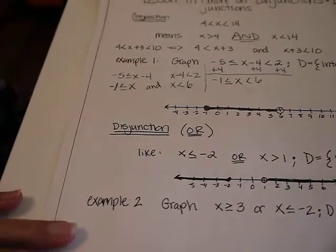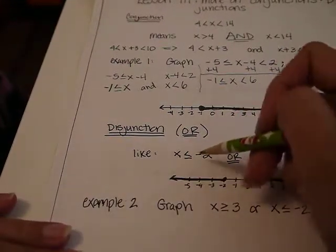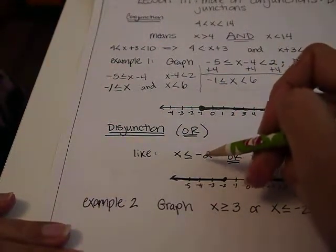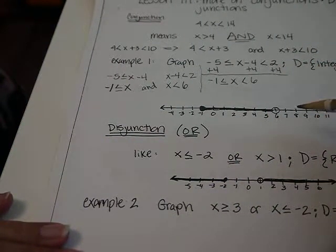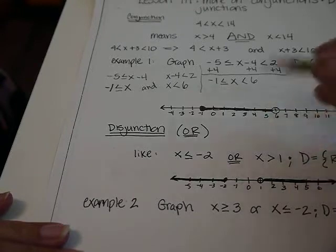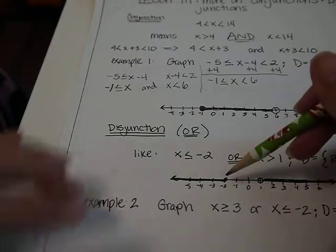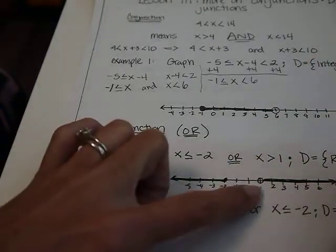or means either one. So a disjunction, you might read something like x is less than or equal to negative 2, or x is greater than 1. Either one is good. So to graph a disjunction means everybody's included all of this and all of that.